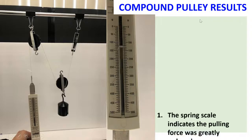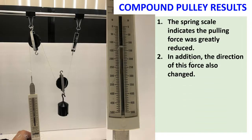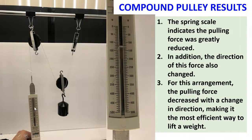Compound pulley results: the spring scale indicates the pulling force was greatly reduced, from 500 grams to about 130 grams. In addition, the direction of the force also changed—in this case, it's downward. For this arrangement, the pulling force decreased with a change in direction, making it the most efficient way to lift the weight. So that's all.